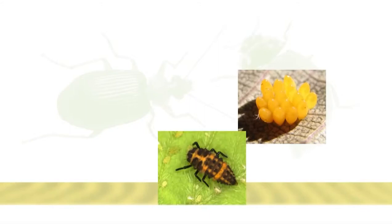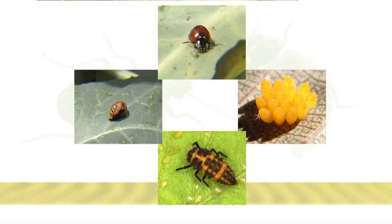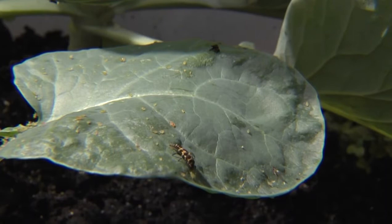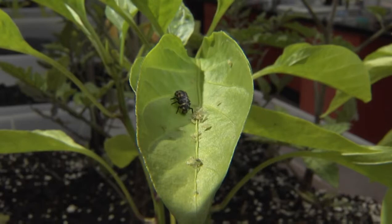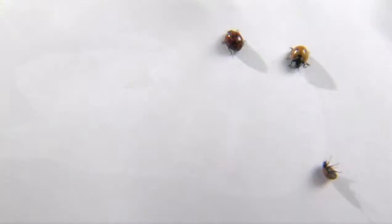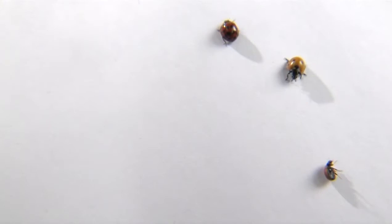Adult female lady beetles lay clusters of oval-shaped orange-to-yellow eggs on plant leaves and stems. The eggs hatch into lady beetle larvae, sometimes referred to as aphid alligators, because they look like tiny alligators and are voracious predators. They are typically black or gray with light markings. When the larvae are fully grown and ready to pupate, they form pupae on plant stems and leaves. A lady beetle pupa is typically the same color as the adult insect, oval in shape and wrinkled. There are many species of lady beetles that are important predators in vegetable crops.